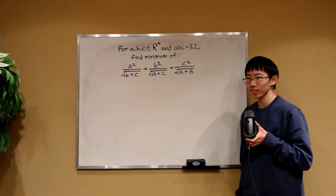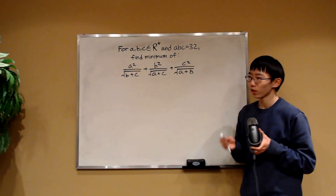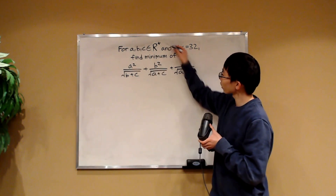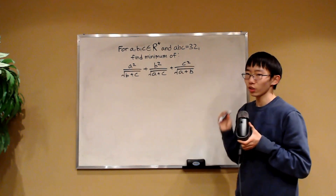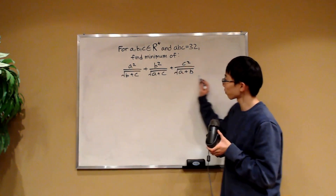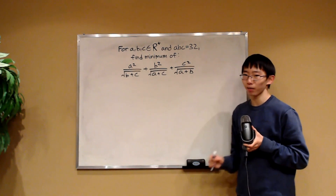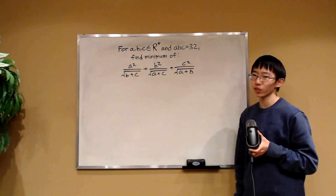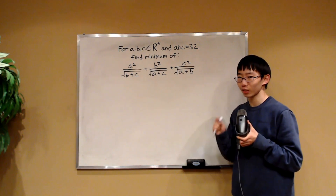Happy holidays! Christmas is coming up, so I made this inequality problem for you. We have three real numbers A, B, and C, which are all positive, and they satisfy that their product is 32. I want you to find the minimum value of this expression. If you are a math enthusiast, or if you love math competitions, or if you just like math in general, then this will be a very pleasant Christmas present.